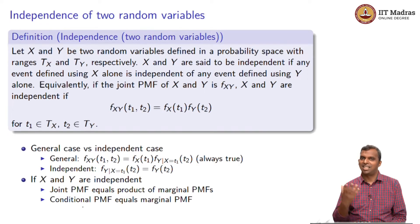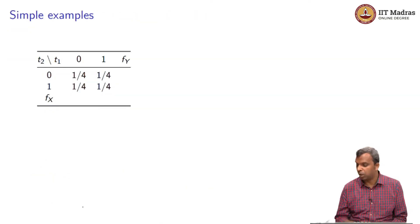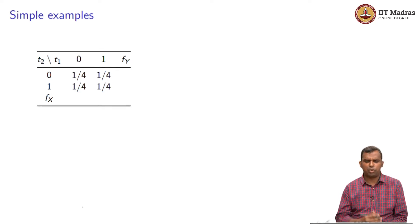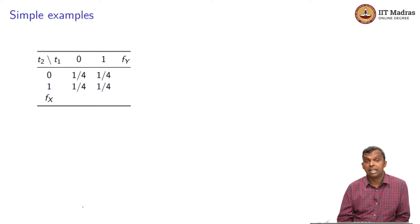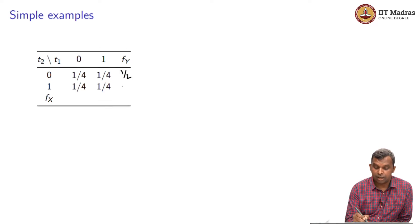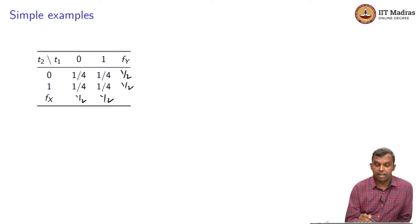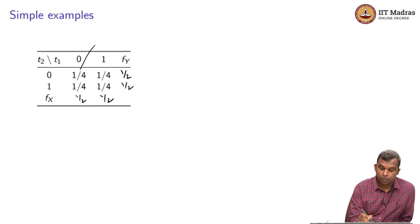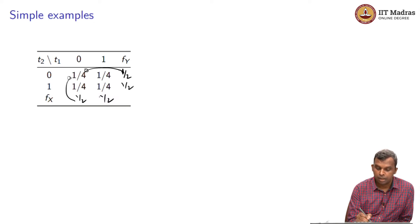Let us start checking with simple examples. Given the joint PMF, how do you check for independence? Here is a joint PMF of X and Y over range {0,1}×{0,1}, with all four entries equal to 1/4. The marginals are all 1/2. You can see that 1/2 × 1/2 = 1/4, so the product of the marginals equals the joint PMF in every cell. We are checking F_{X,Y}(t1, t2) = F_X(t1) · F_Y(t2) for all t1 and t2 — in this case, X and Y are independent.